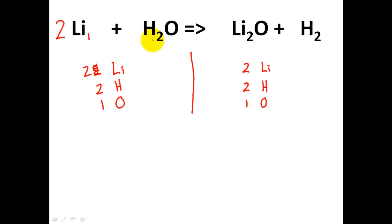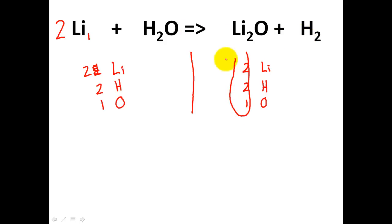Hydrogens: I have two over here and two over here — so far they're balanced as well. And the oxygens: one and one. So the 2-1-1 combination is the same as the 2-1-1 over here. I have balanced my chemical reaction.